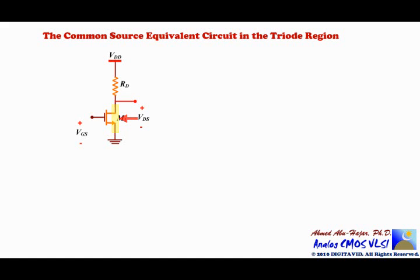This resistor we can call RDS, and this RDS is inversely proportional to VGS, which is the DC gate-to-source voltage. The value of RDS is given as follows: it is equal to 1 over K_N times W over L times VGS minus V_T.